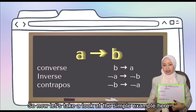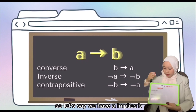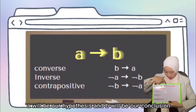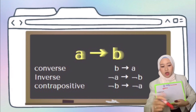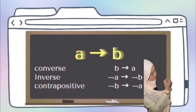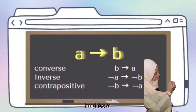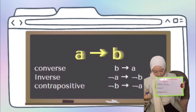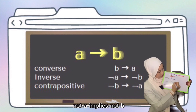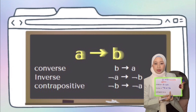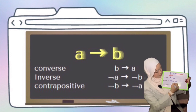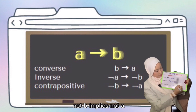Let's take a look at a simple example. Let's say we have A → B, where A is our hypothesis and B is our conclusion. To write it as a converse, we write B → A. For the inverse, we write ¬A → ¬B. For the contrapositive, we write ¬B → ¬A.